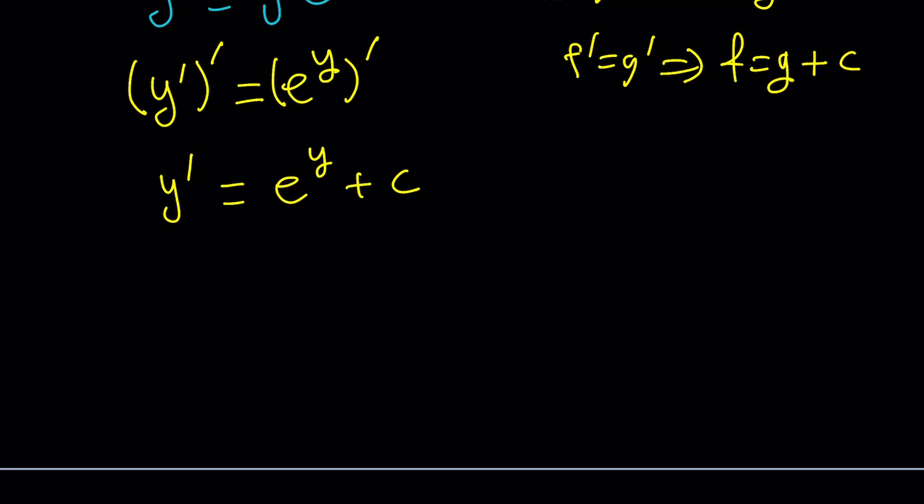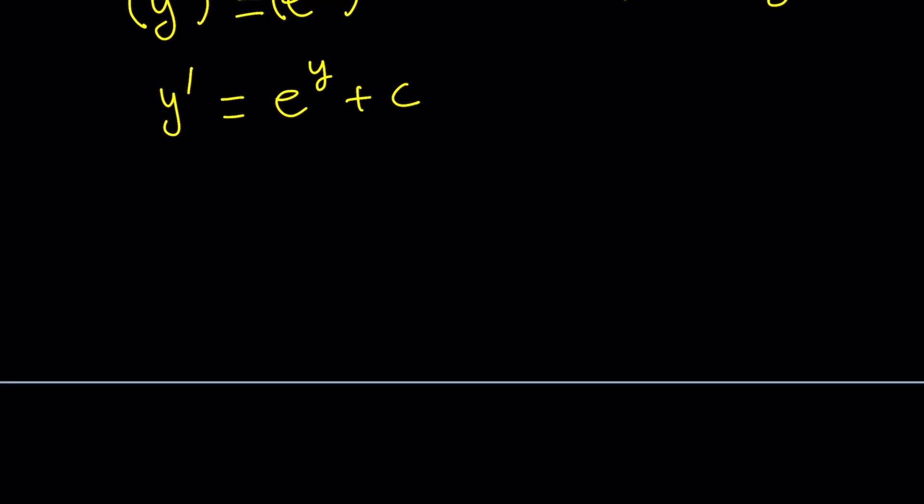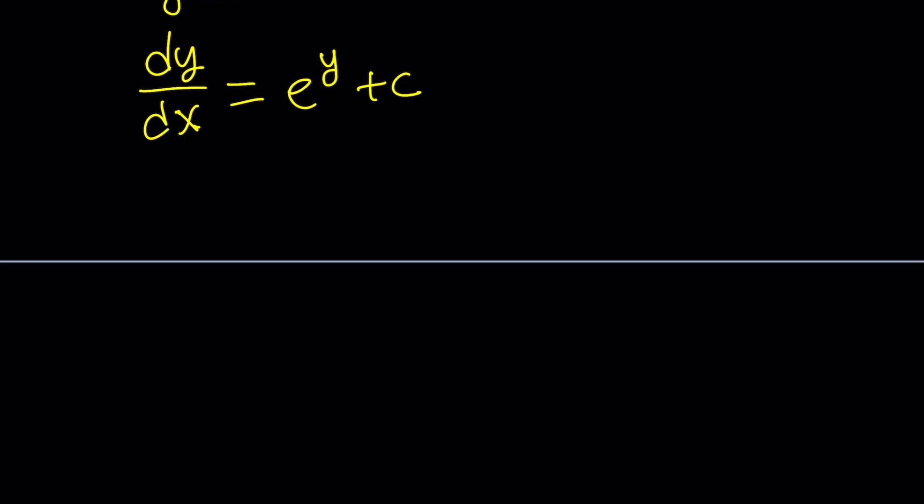Doesn't this look like an easy equation like y prime and e to the y? No. Hold on. Wait. This is going to turn into a separable differential equation. So let's go ahead and separate the variables. This is dy over dx. And this is e to the y plus c. Again, imagine you had e to the x instead of e to the y. It would be a different story. It would be a really good story. But anyway, this is good too.